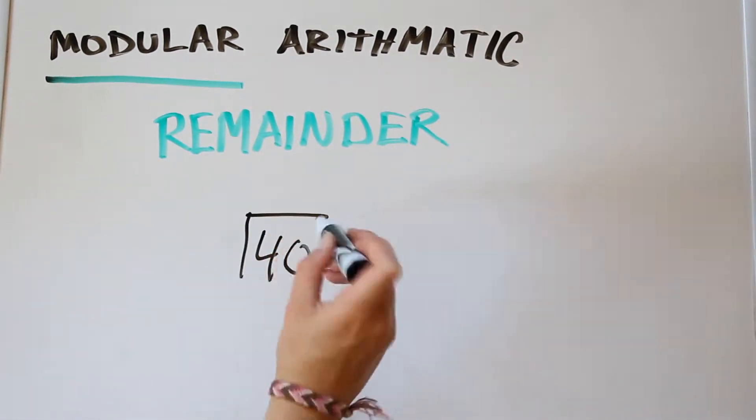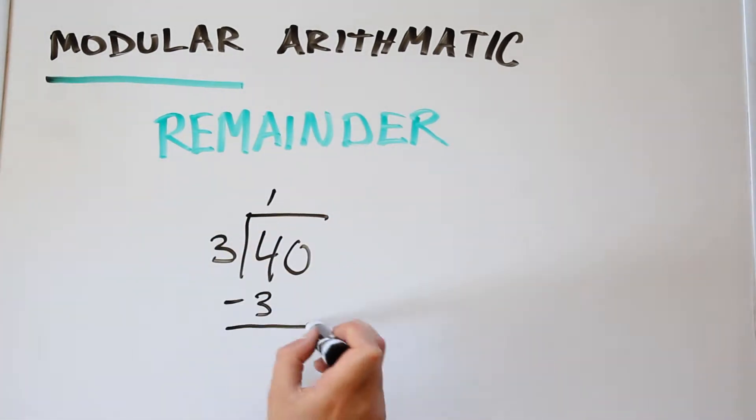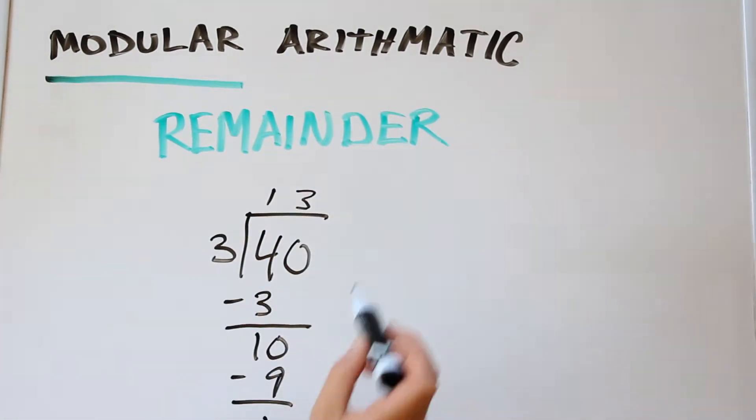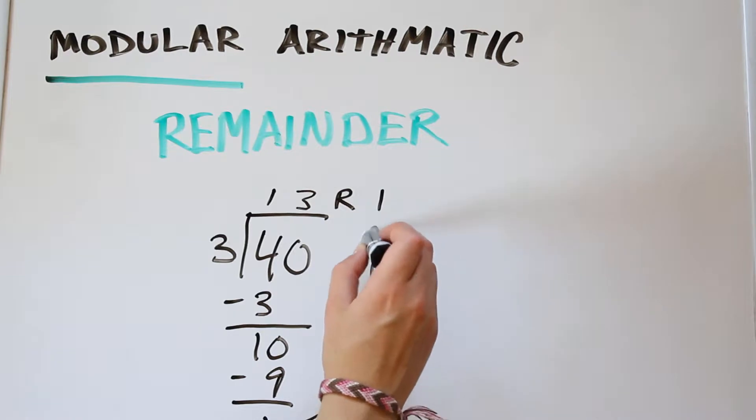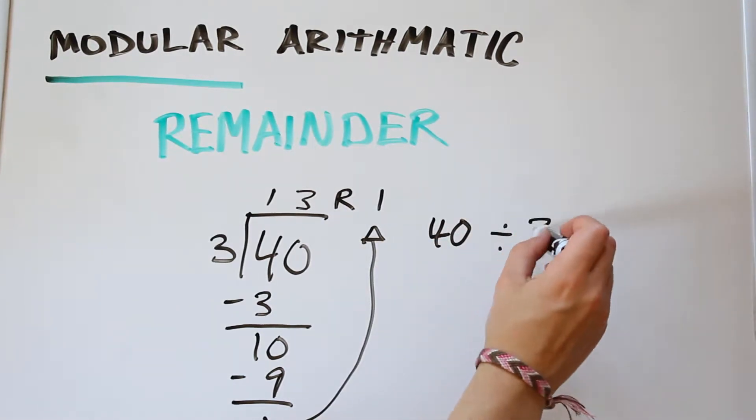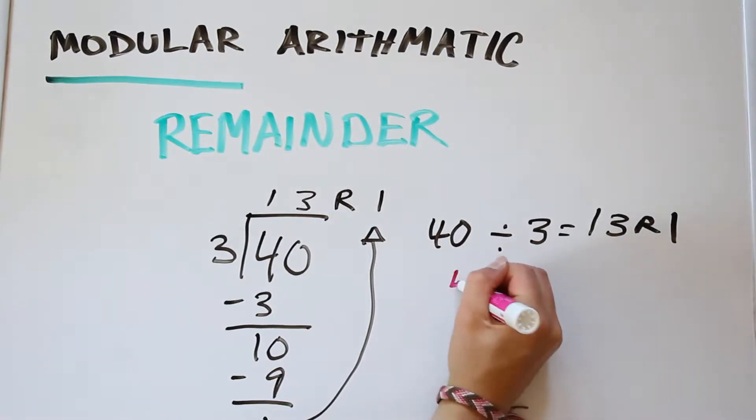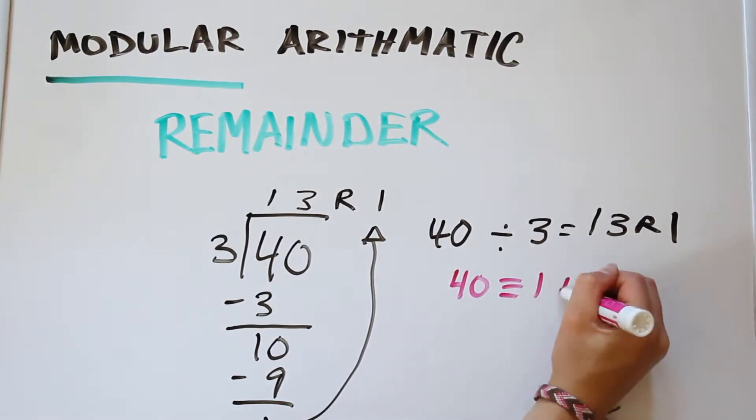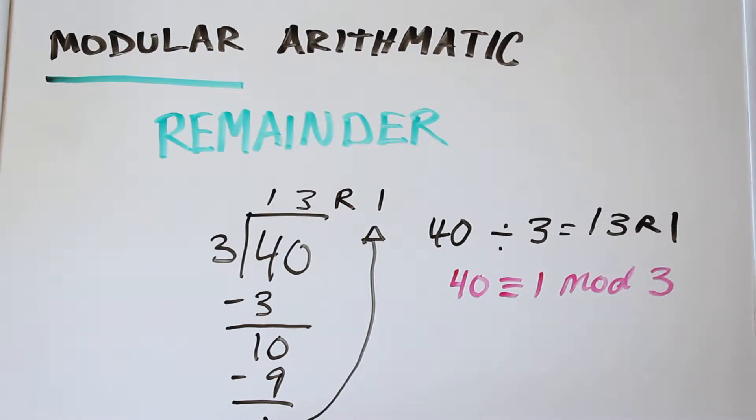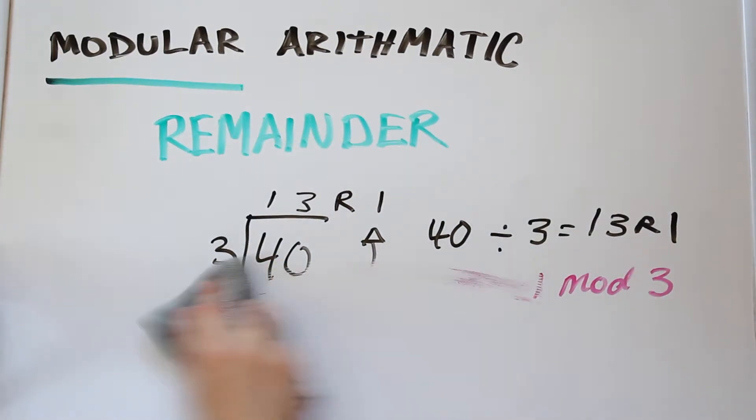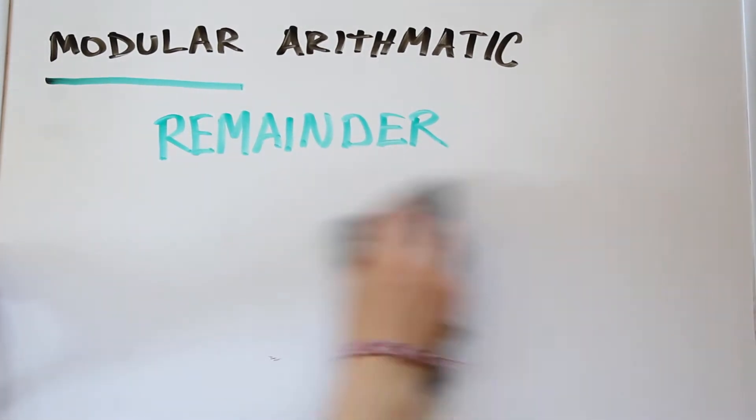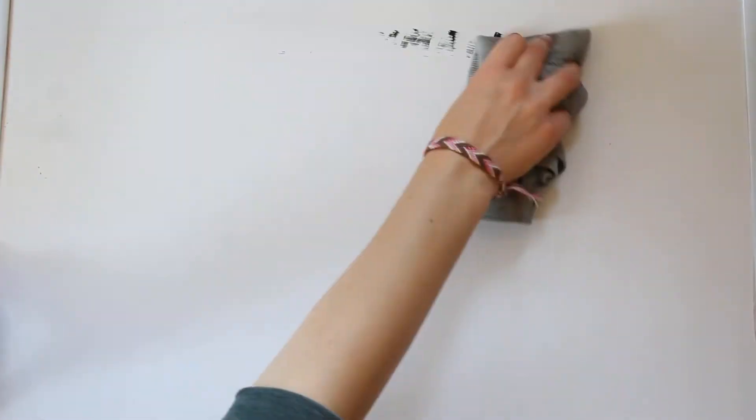We would say in elementary school that 40 divided by 3 equals 13 remainder 1. Well, if we're using modular, we would say 40 is congruent to 1 mod 3. So you set the number equal to the remainder.